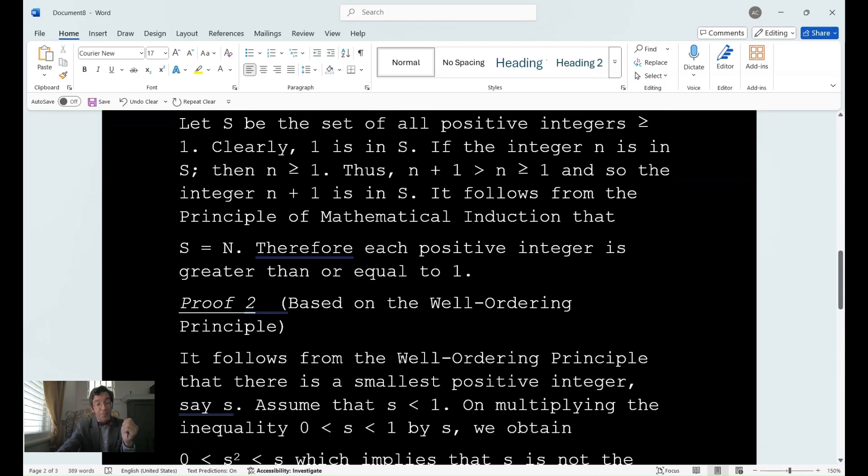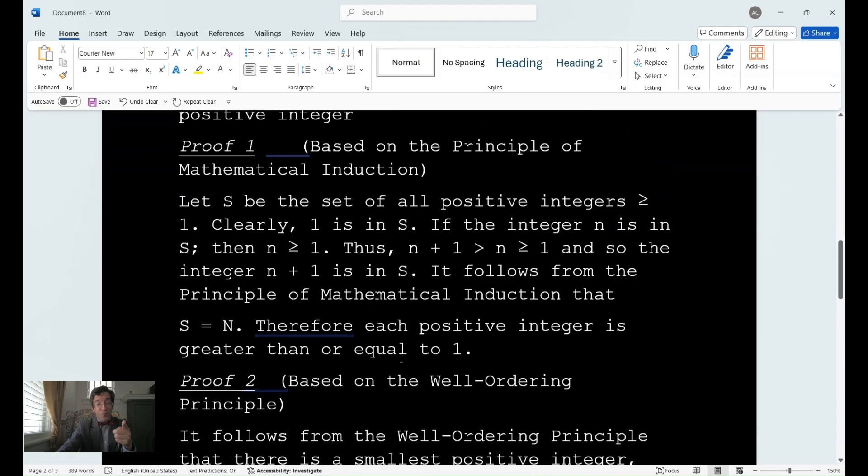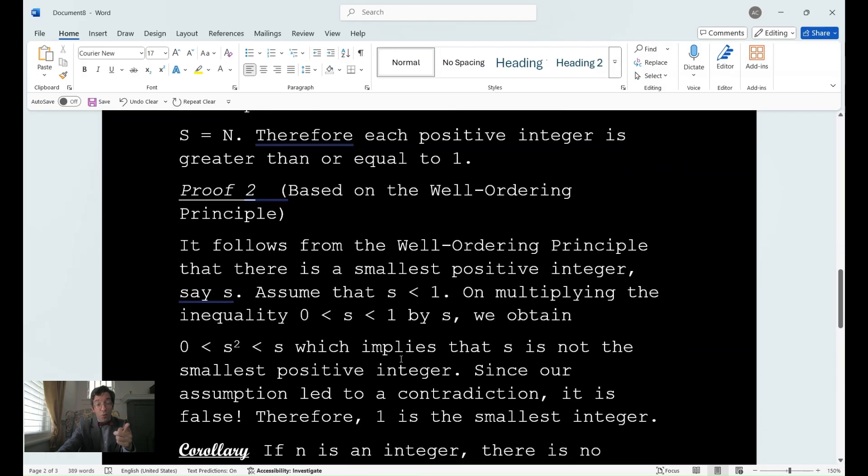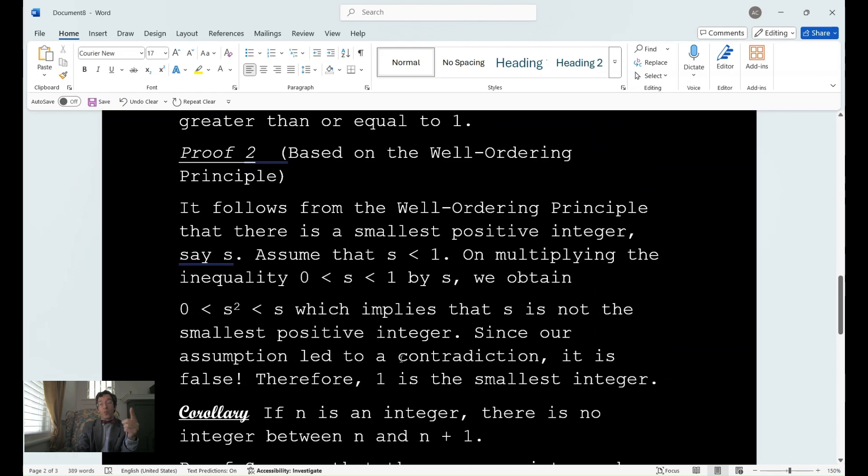I have another proof here, based on the well ordering principles. It follows from the well ordering principle that there is a smallest positive integer, say s. Assume that s < 1. If you multiply the inequality 0 < s and s < 1 by s, you obtain 0 < s² and s² < s, which implies that s is not the smallest positive integer. And since our assumption led to a contradiction, it is false. And therefore, 1 is the smallest integer.